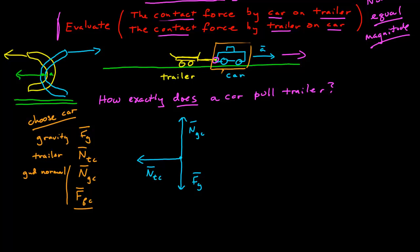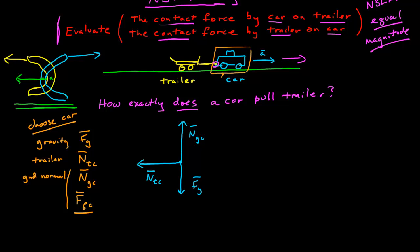Now, where is the frictional force? Most students, when asked straight up what direction the frictional force is for this car going forward, will say the frictional force goes to the left. But exactly how is that possible? If I put the frictional force to the left and call this the positive x-axis, there are no forces to the right. I have just proved by Newton's second law that the car cannot, in fact, tow a trailer — it would accelerate backwards. So we know that doesn't happen, which means we've done something wrong.